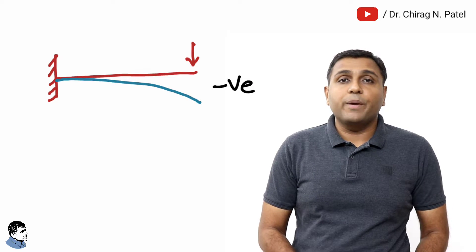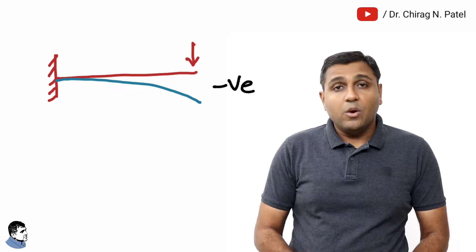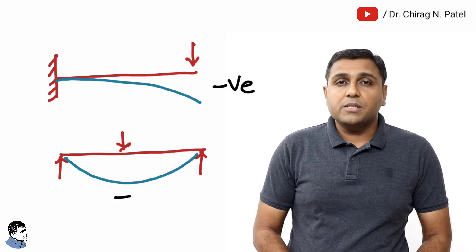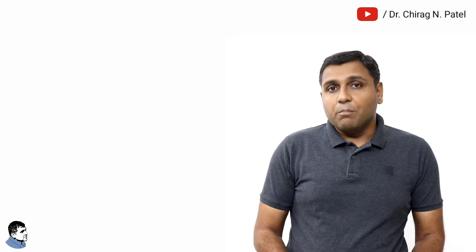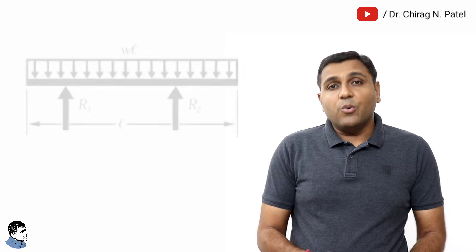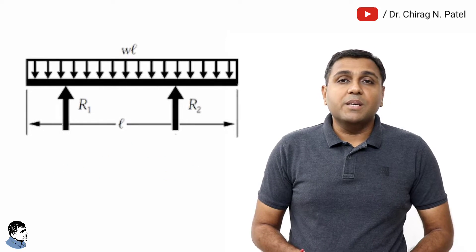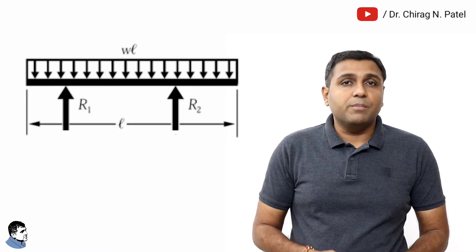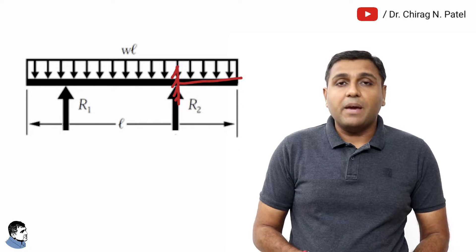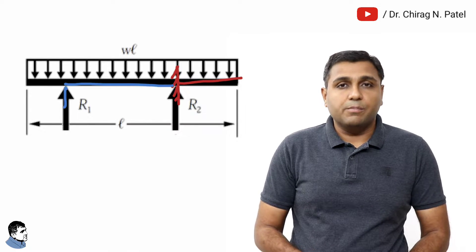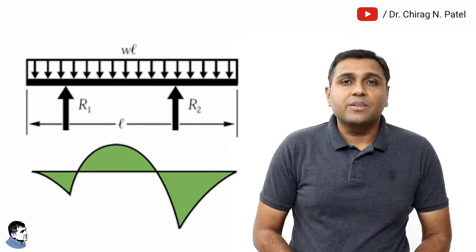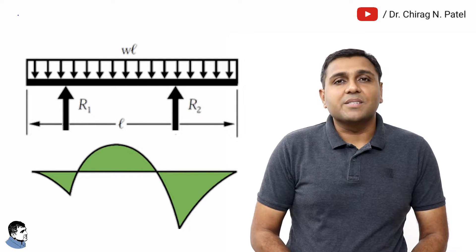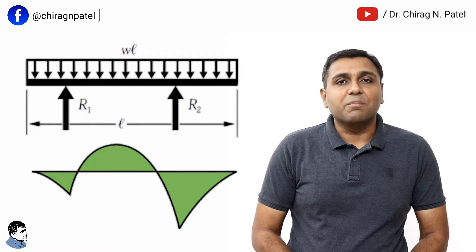Normally for a cantilever beam, bending moment is negative, while for a simply supported beam, bending moment is positive. But the overhanging beam is a combination of both the cantilever beam and the simply supported beam. Thus, the contra flexure normally occurs in overhanging beams.